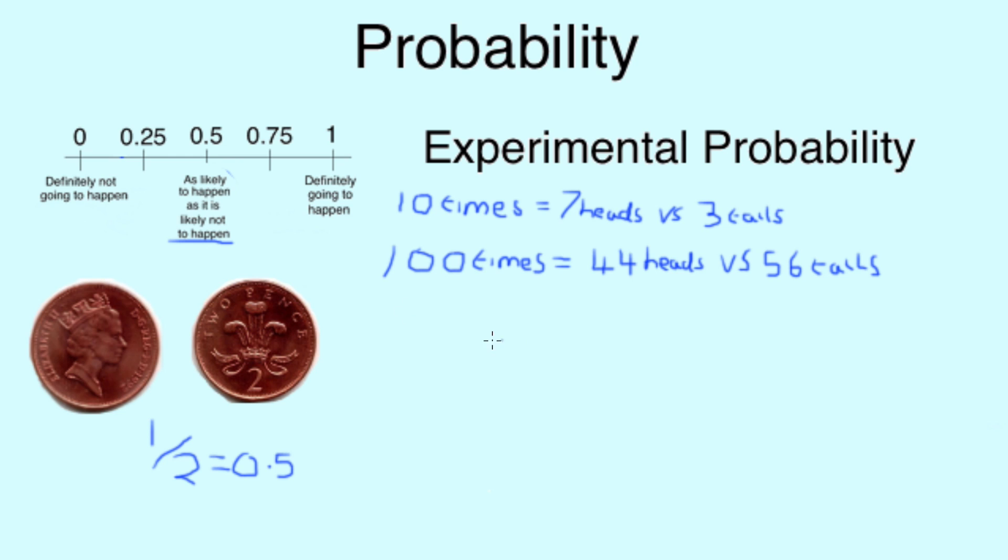We could do the experiment again and flip the coin 1000 times, only this time we might get something even closer than that, as around 500 times for heads and 500 times for tails. By flipping the coin more times, we've come to a more accurate answer, therefore we can safely say that the more we experiment, the more accurate the results.